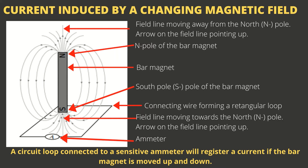The question becomes: why are we interested in measuring current when the wire is not connected to a battery or power source? The answer is that when we move the bar magnet up and down, our ammeter will actually measure a current flowing in the wire. When we move the bar magnet closer to the loop, the magnetic field increases in strength, and when we move it away, it decreases. If you were to just place the magnet next to the loop without moving it, the ammeter would not measure a current — the magnetic field has to be changing.